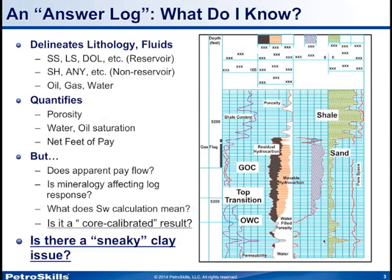Generally, when we're done drilling a well, we come up with an answer log. This answer log summarizes the lithology and the fluids present, and quantifies the porosity, water and oil saturation, and our estimation of the net feet of pay. But it doesn't really tell us if the apparent pay really flows, or whether there is a mineralogy effect on the logs and what that means for the water saturation calculation. Is it a core-calibrated — or rock-calibrated — result? Ultimately, is there a question about a sneaky clay being present?